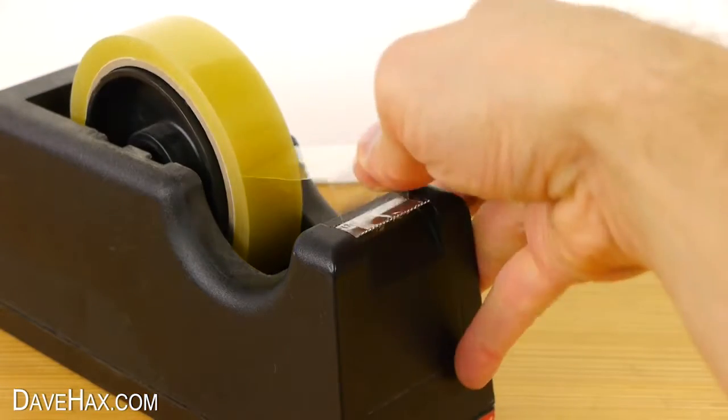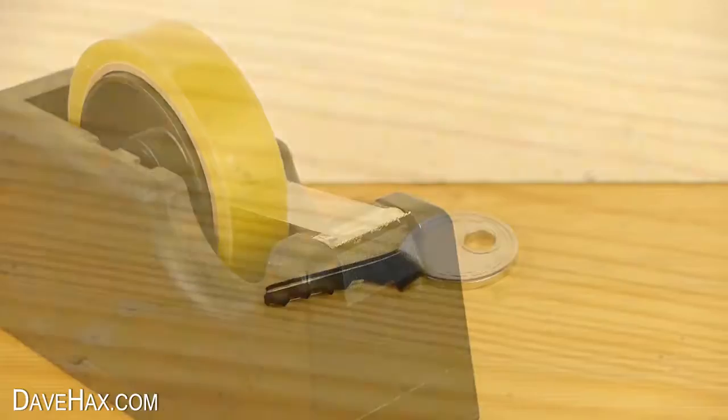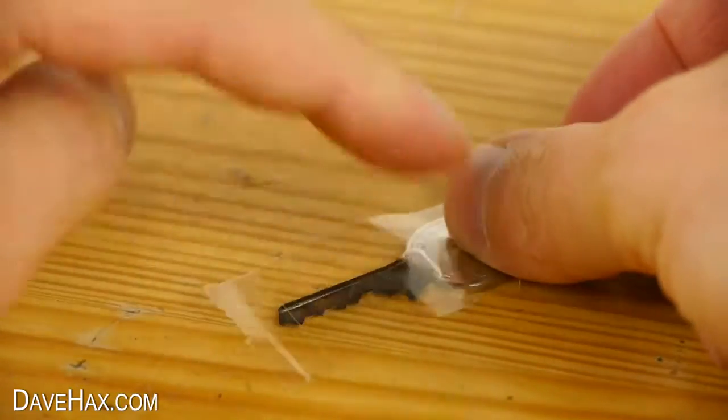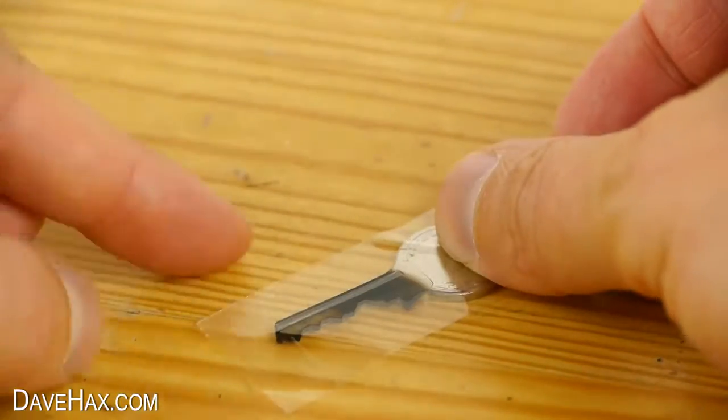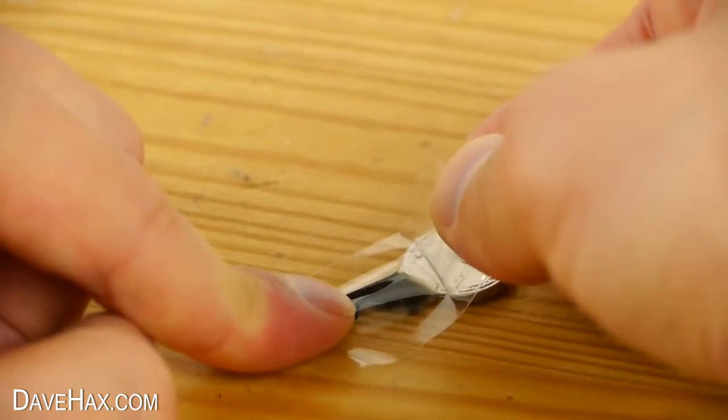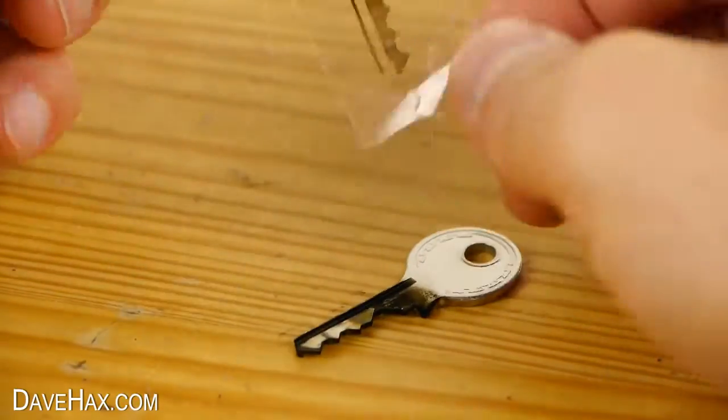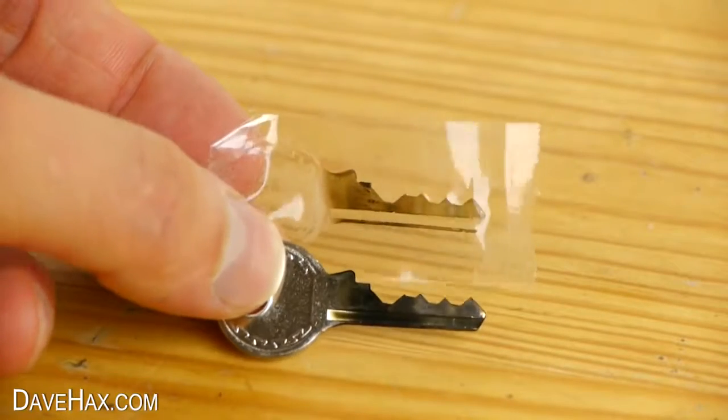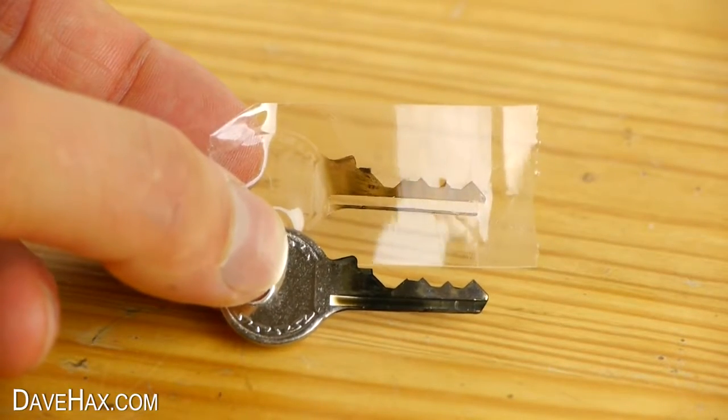Next, we need to take a strip of tape and stick it onto the key like this to take a print. Carefully peel it off and you should have an exact copy of the key like this. Pretty cool, huh?